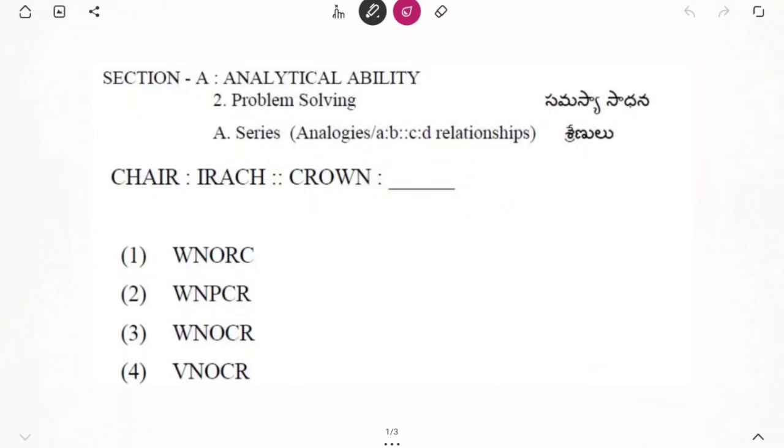Now we are having one more question here. Like this before also in my previous video same question came. Means in the same exam paper two questions are almost similar. If you have seen my previous video part 1 video of the analytical ability questions then you can easily solve this question. Here we are having chain is changed like this I, R, A, C, H. Crown should be changed to what?